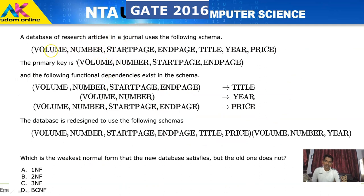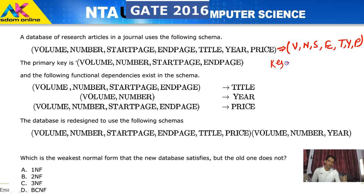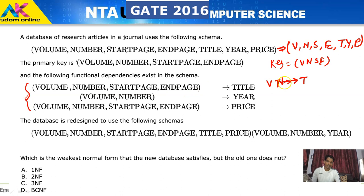The next question involves a database table: Volume (V), Number (N), Start page (S), End page (E), Title (T), Year (Y), and Price (P). The key of this relation is V N S E. The functional dependencies are: V N S E → T, V N → Y, and V N S E → P.